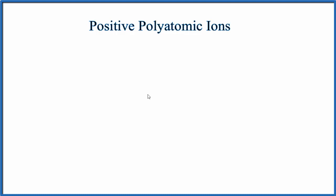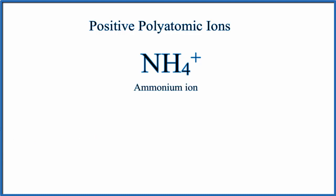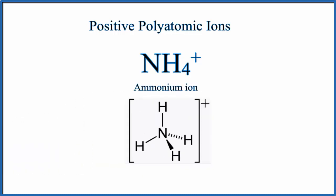The first is NH4+. This is called the ammonium ion, and this is its structure. This is probably the one you'll see the most often. The ammonium ion is a positive ion — it has a 1+ charge, so it can bond with other elements or polyatomic ions that have negative charges.